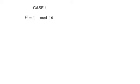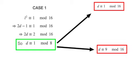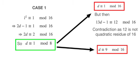Suppose that l squared is congruent to 1 modulo 16. By dividing by 2 throughout, we see that d must be congruent to 1 modulo 8. If we consider modulo 16, we can have either d congruent to 1 modulo 16 or 9 modulo 16. If d is congruent to 1 modulo 16, then 13d-1 is congruent to 12 mod 16, which is not a quadratic residue, so we derive a contradiction here.